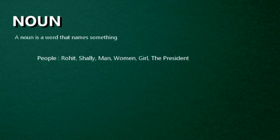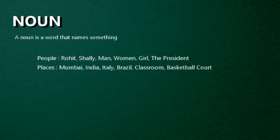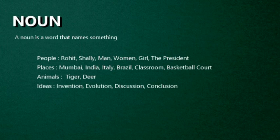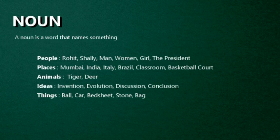Noun — what is a Noun? Nouns are naming words that are used to name people, such as Roly, Shally, Man, Woman, Girl, the President; and places, such as Mumbai, India, Italy, Brazil, Classroom, Basketball Court; animals, such as Tiger, Deer; ideas, such as Invention, Evolution, Discussion, Conclusion, Argument, Destruction; and things, such as Ball, Car, Bedsheet, Stone, Bag, Laptop, Desk. Nouns are the naming words used to name people, places, animals, ideas and things.